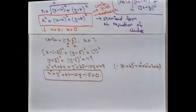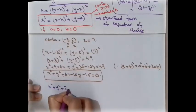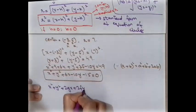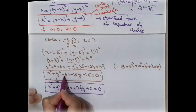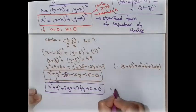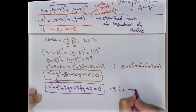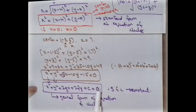We may be asked which type of curve a given equation represents — a circle, parabola, or hyperbola. To determine this, we use the general form of the equation of a circle: x² + y² + 2gx + 2fy + c = 0, where g, f, and c are constants. Comparing our result with this general form confirms it is a circle.